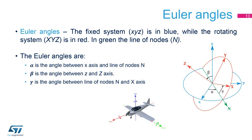The Euler angles are very useful to represent the orientation of a quadcopter or other flying vehicle in the air and are used for the basic PID control algorithm of the FCU. The main goal of the FCU algorithm is to move from source angles to destination angles, estimating the Euler angles alpha, beta, and gamma, and so balancing the drone.